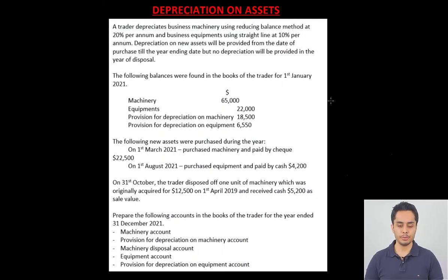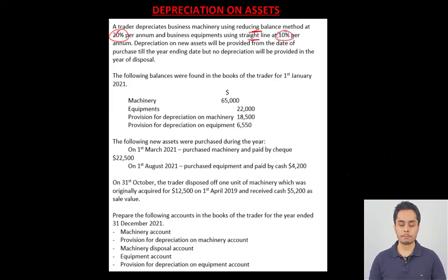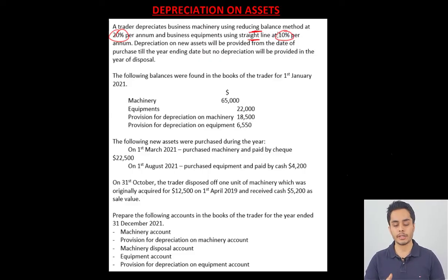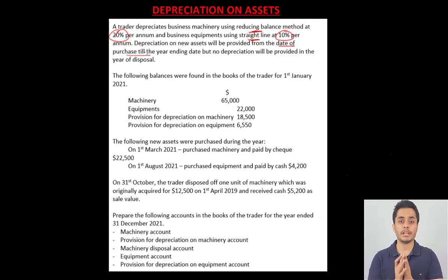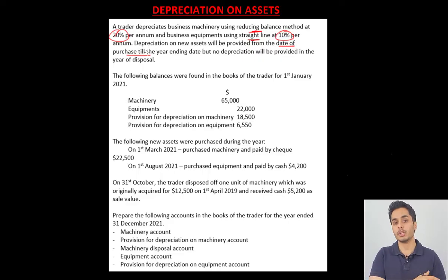Here is the question. A trader depreciates business machinery using the reducing balance method at 20% rate, and business equipment at straight line 10% rate. So both assets will be depreciated using different rates and different methods. Depreciation on new assets will be provided from the date of purchase till the year ending date — so the date of purchase is important for new assets. If we use the asset for just three months during the year, we provide depreciation only for three months.